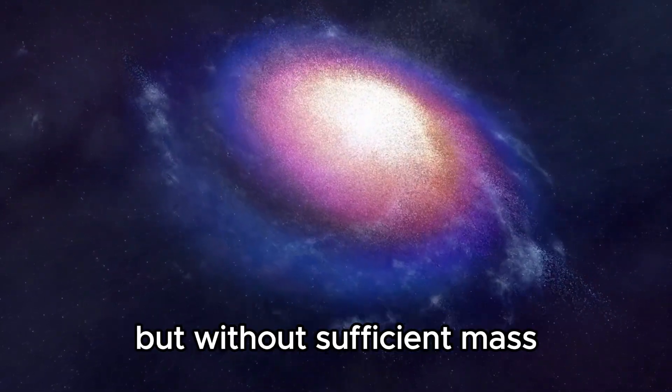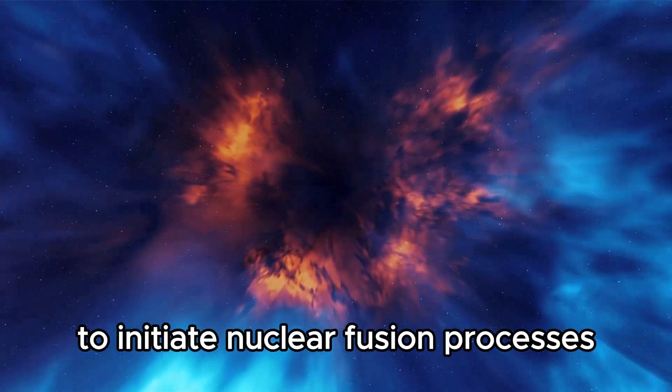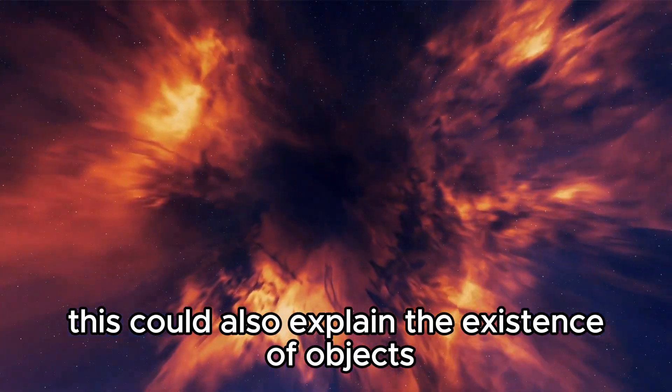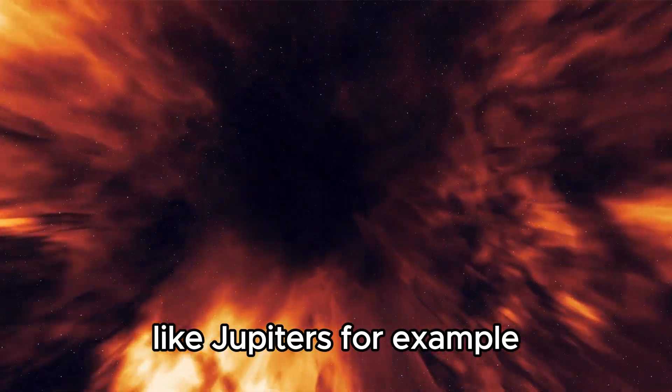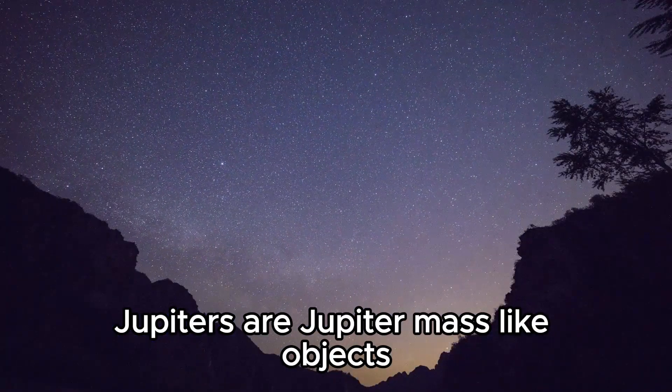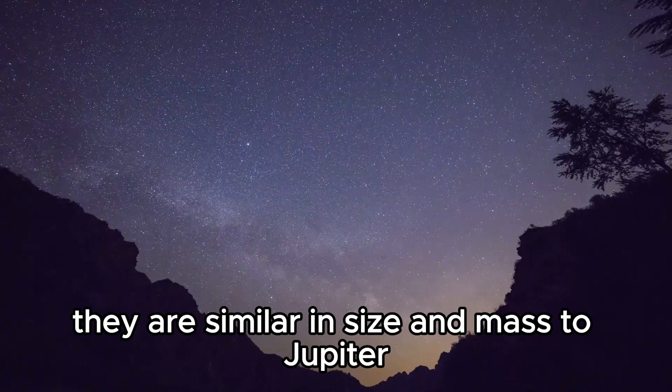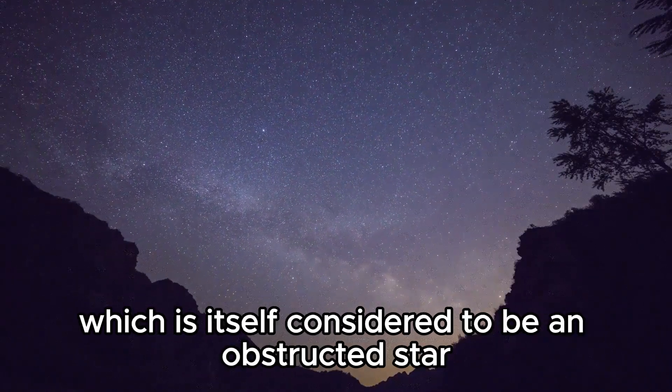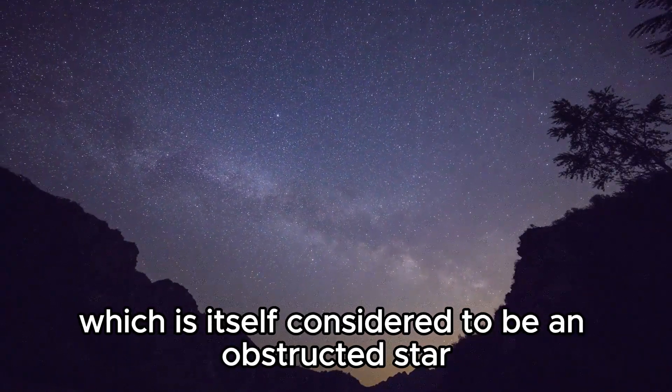Similar to stars but without sufficient mass to initiate nuclear fusion processes. This could also explain the existence of objects like Jupiters. For example, Jupiters are Jupiter-mass-like objects. As the name suggests, they are similar in size and mass to Jupiter, which is itself considered to be an obstructed star.